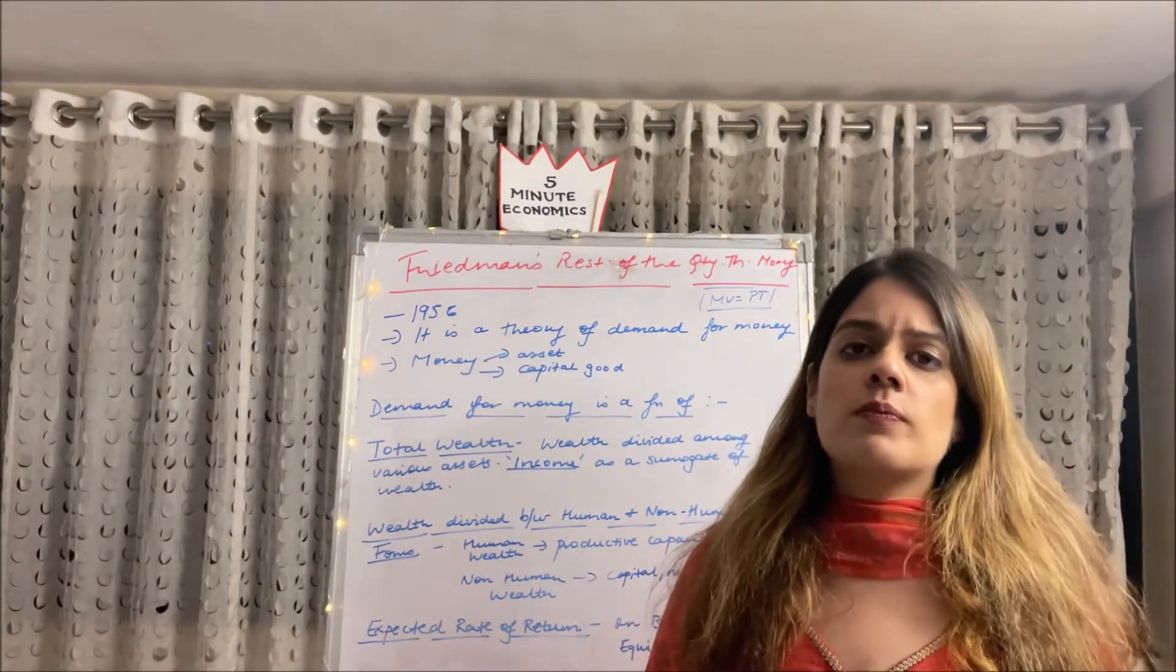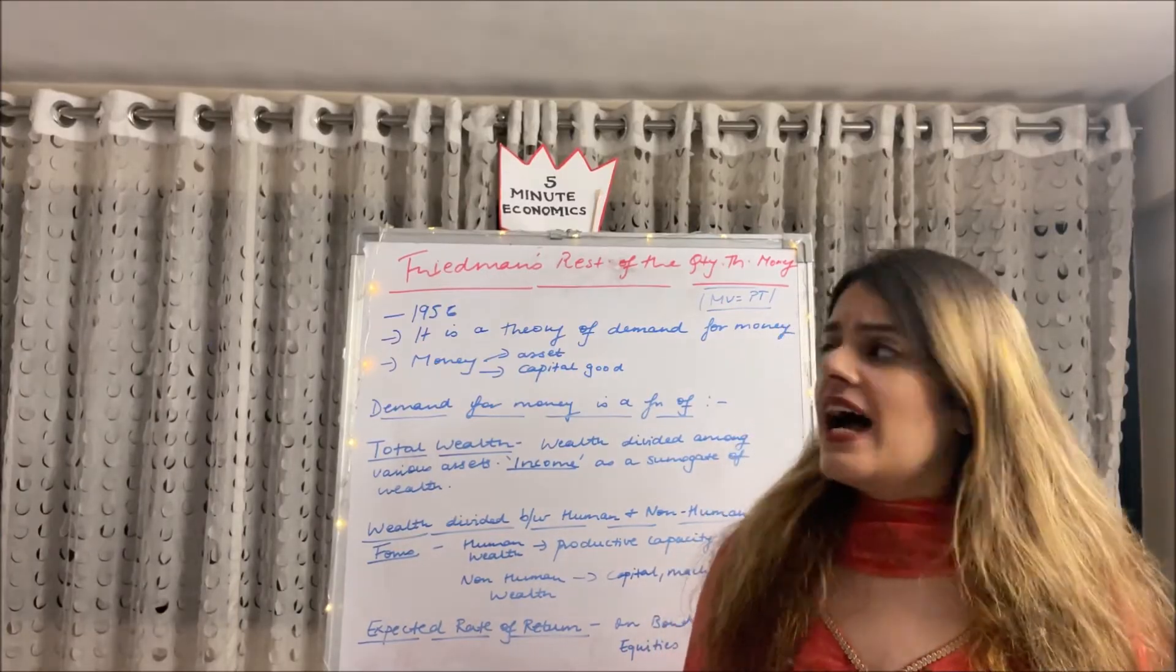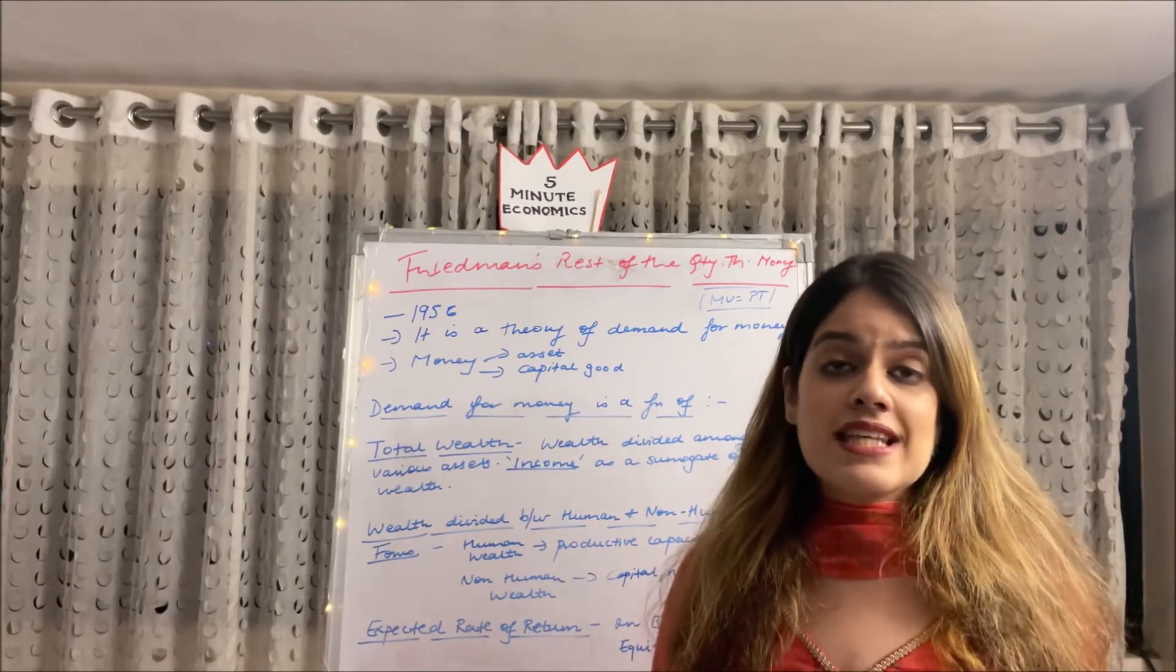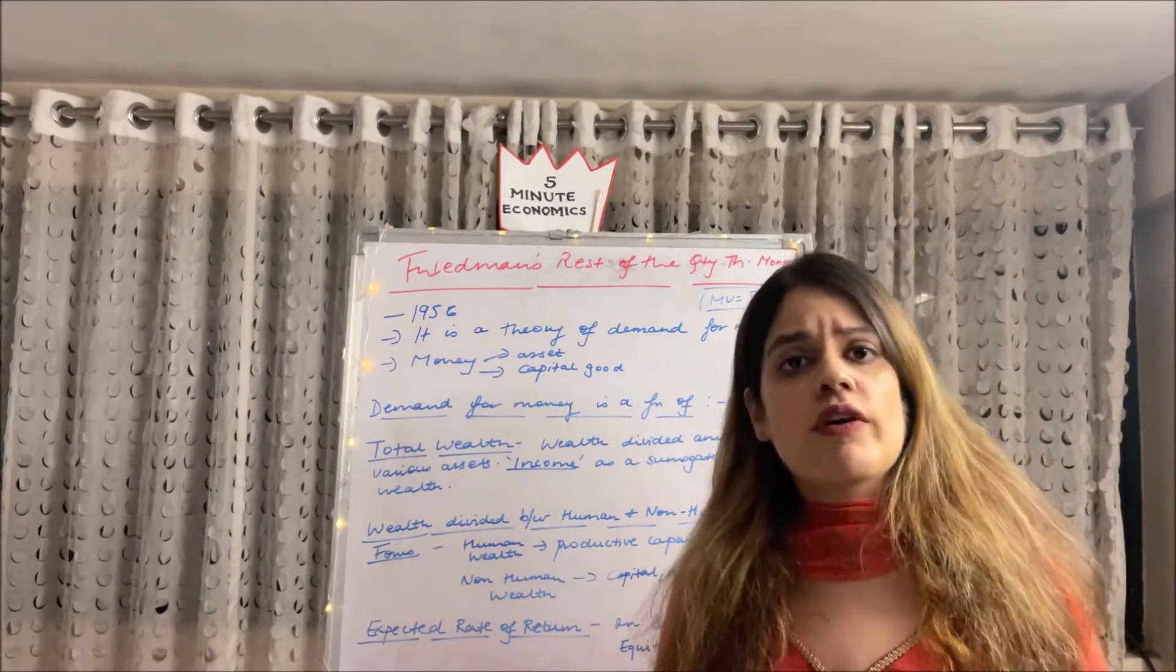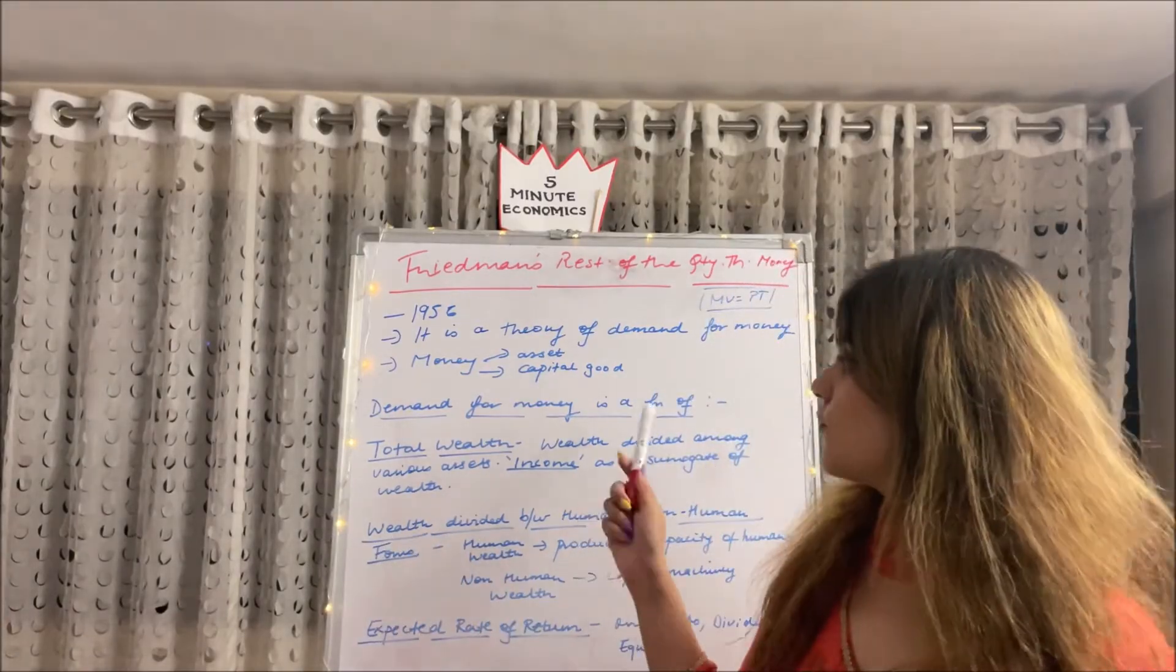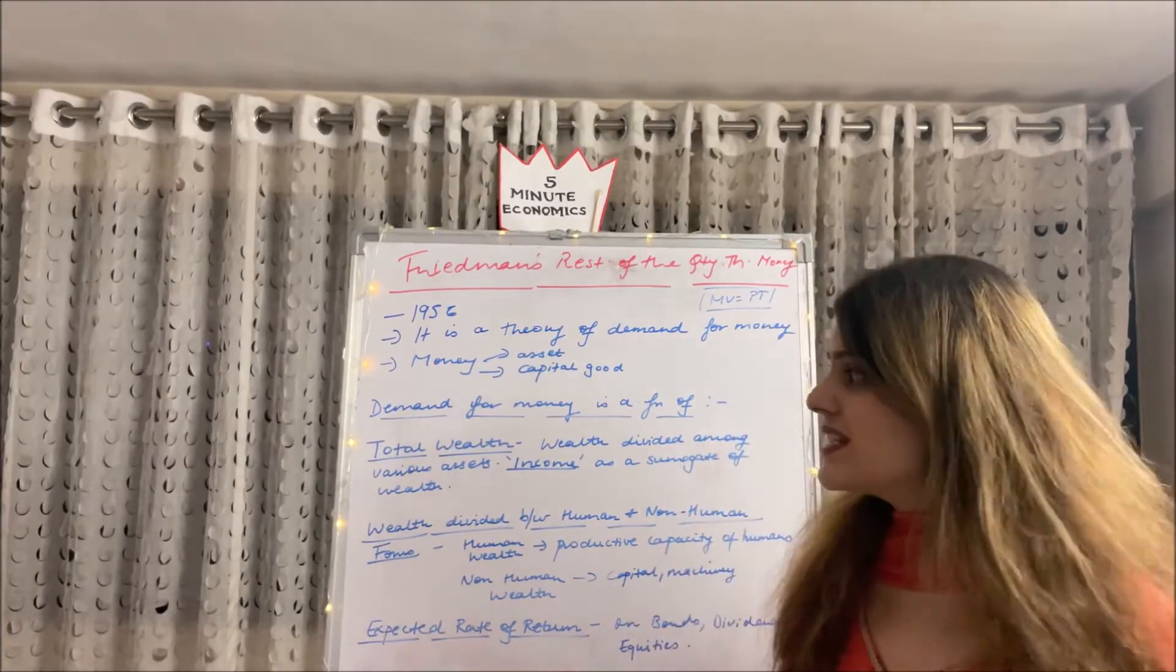It is not about output, it is not about income and prices, but it is about demand for money. And he said money can be divided into two types or ways. Money can be treated as an asset or a capital good. He also stated in his theory that demand for money is a function of variable things. So let us go through all the three sets.